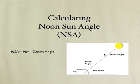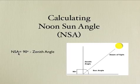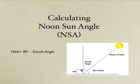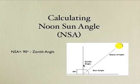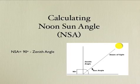Calculating noon-sun angle is relatively easy. The noon-sun angle, represented by NSA, is equal to 90 degrees minus the zenith angle. So if I take 90 degrees and subtract the zenith angle, I'll be left with this angle right in here — and that's the sun angle.